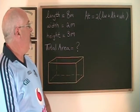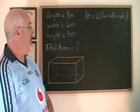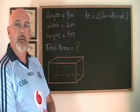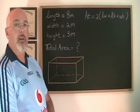In this first example, we are given the length, the width, and the height of this rectangular prism and we are being asked to find its total area.